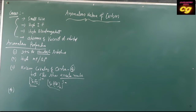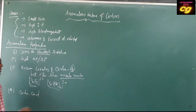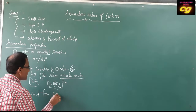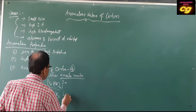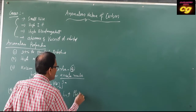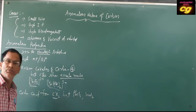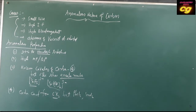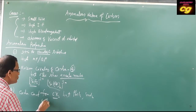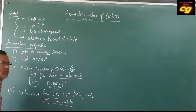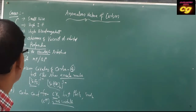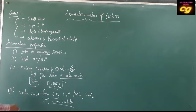Another important property: carbon cannot form CX2 dihalides. Dihalides of carbon are not possible because C²⁺ is unstable and does not exist. But lead dichloride and tin dichloride are possible. Dihalides of other elements are possible, but not for carbon. That is why carbon only produces tetrahalides.